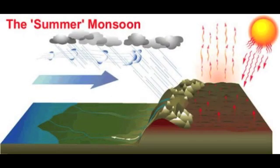During warmer months, sunlight heats both land and ocean surfaces but land temperatures rise more quickly. As the land surface becomes warmer, the air above it expands and an area of low pressure develops. Meanwhile, the ocean remains at a lower temperature than the land, so the air above it retains a higher pressure. This difference in pressure causes sea breezes to blow from the ocean to the land, bringing moist air inland. This moist air rises to a higher altitude over land and then flows back toward the ocean, completing the cycle.